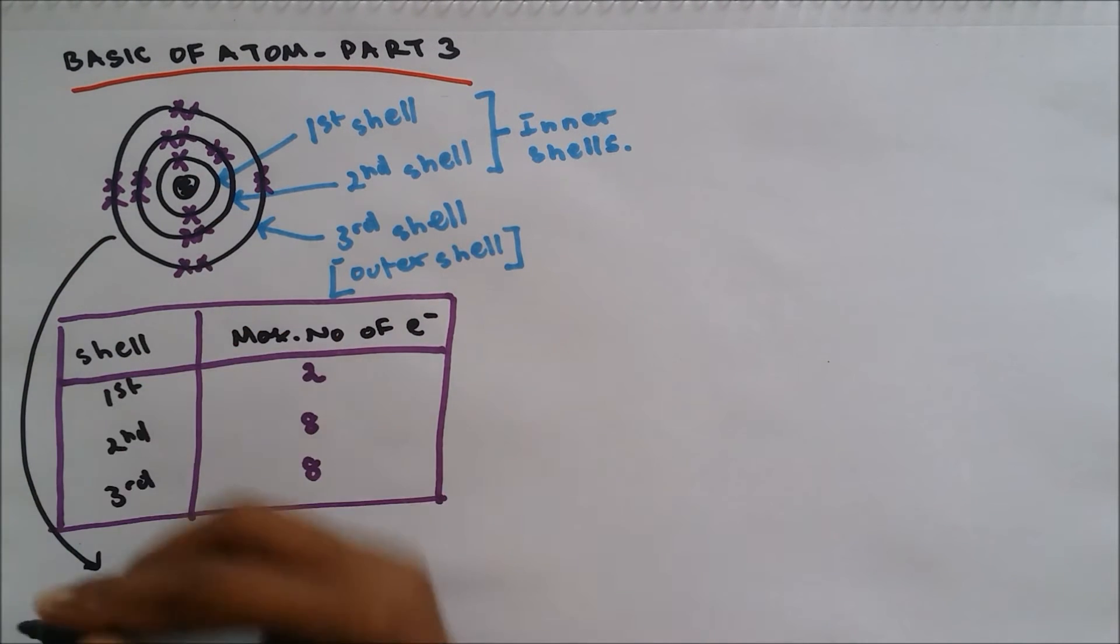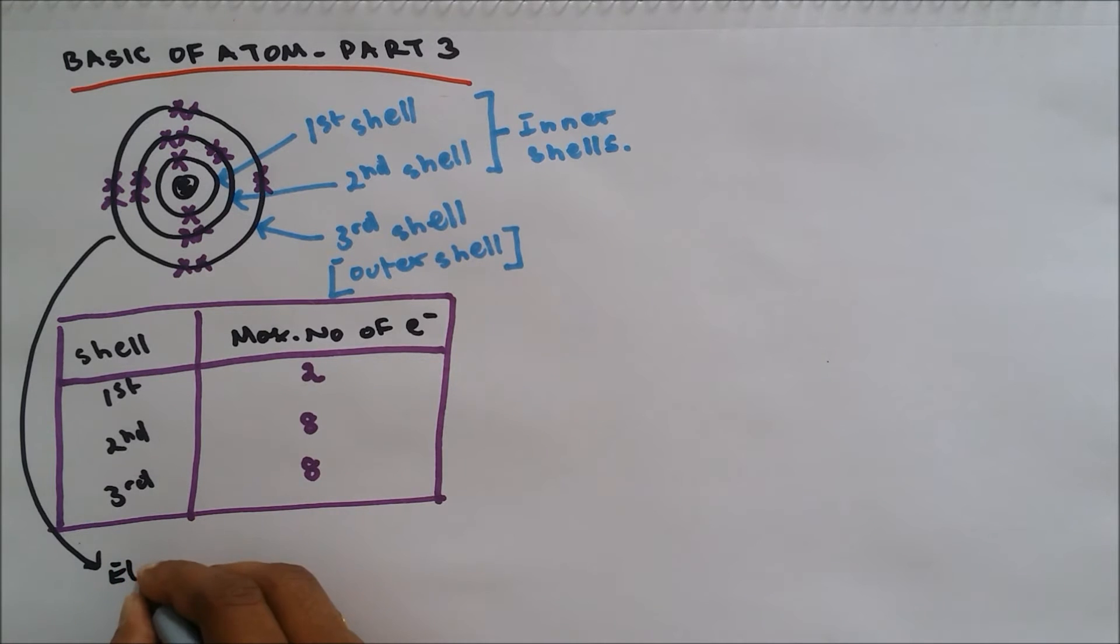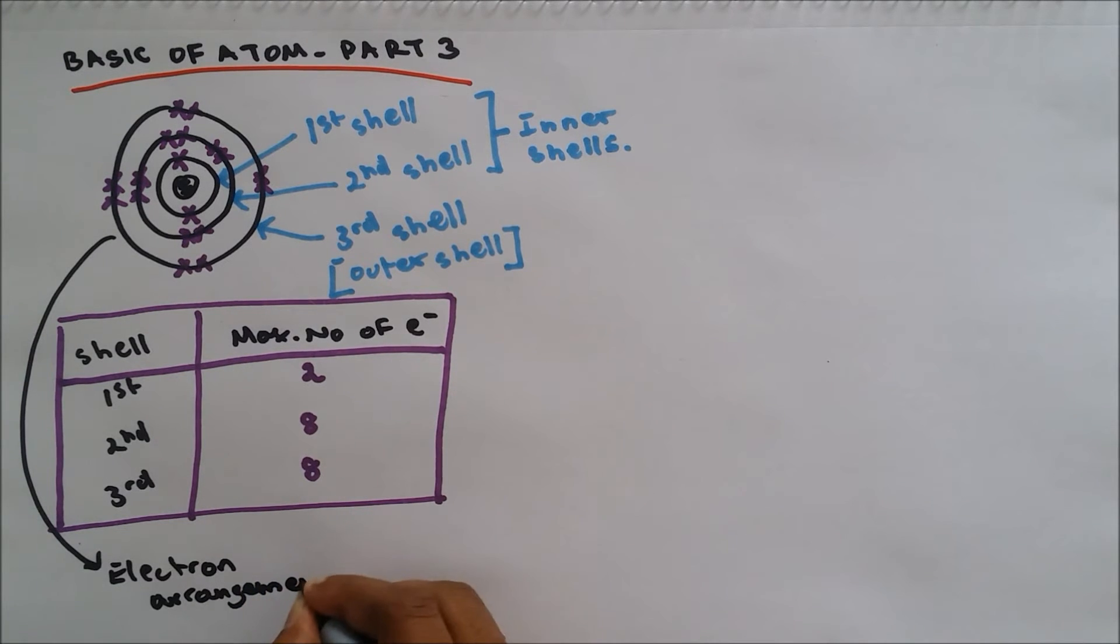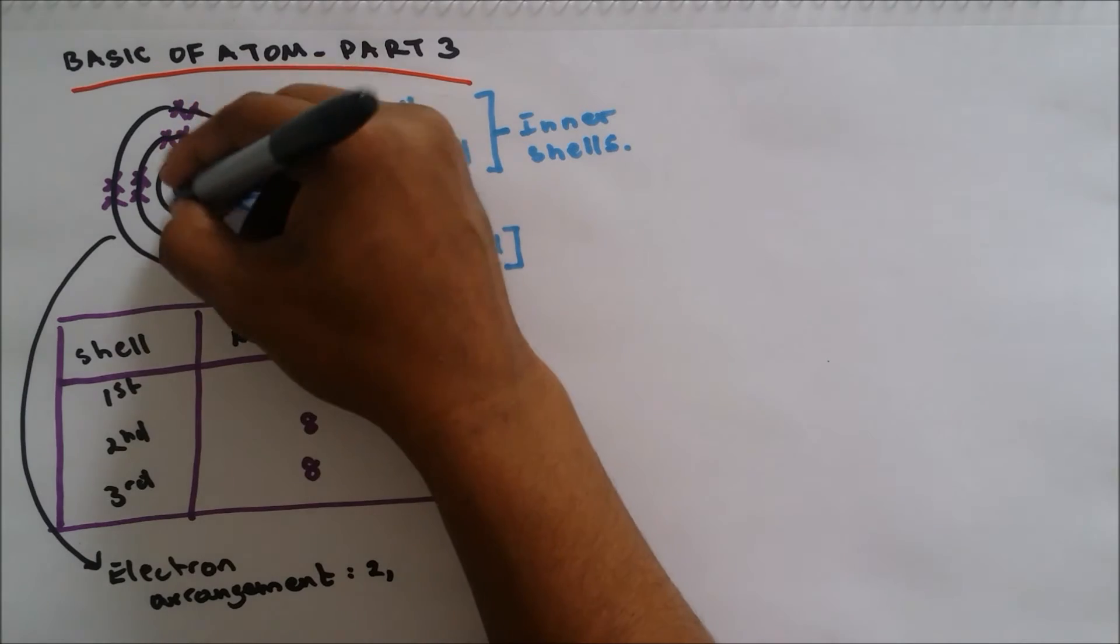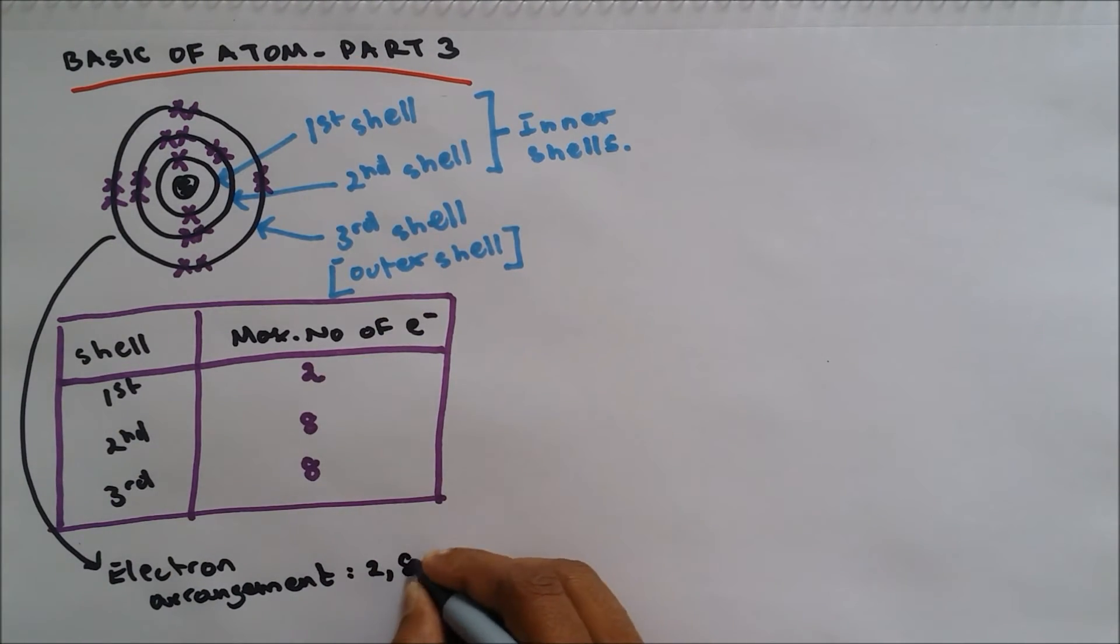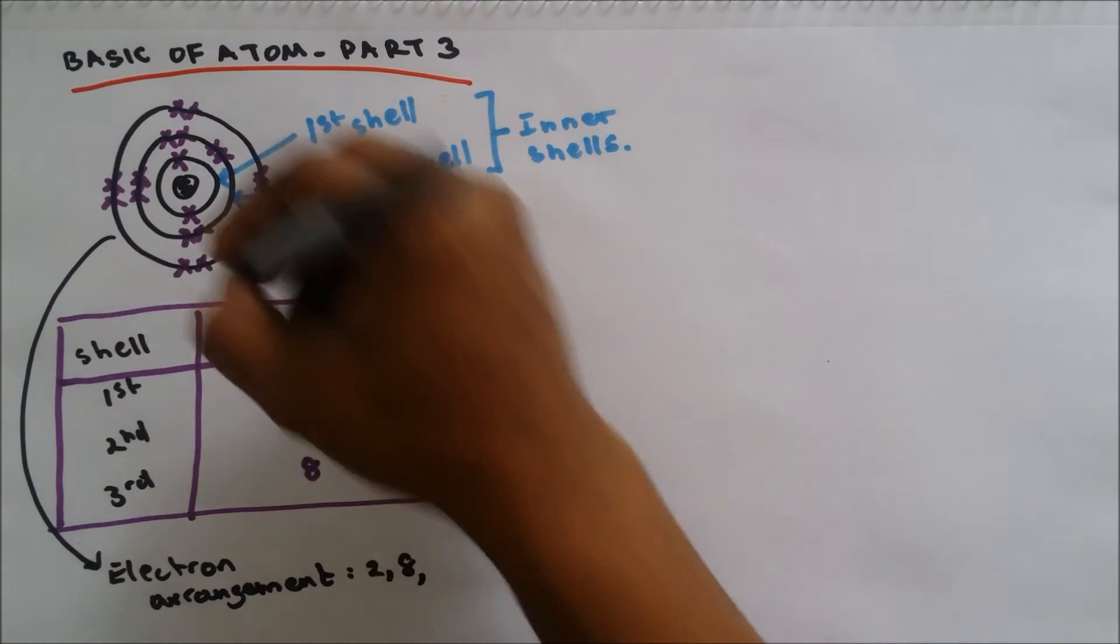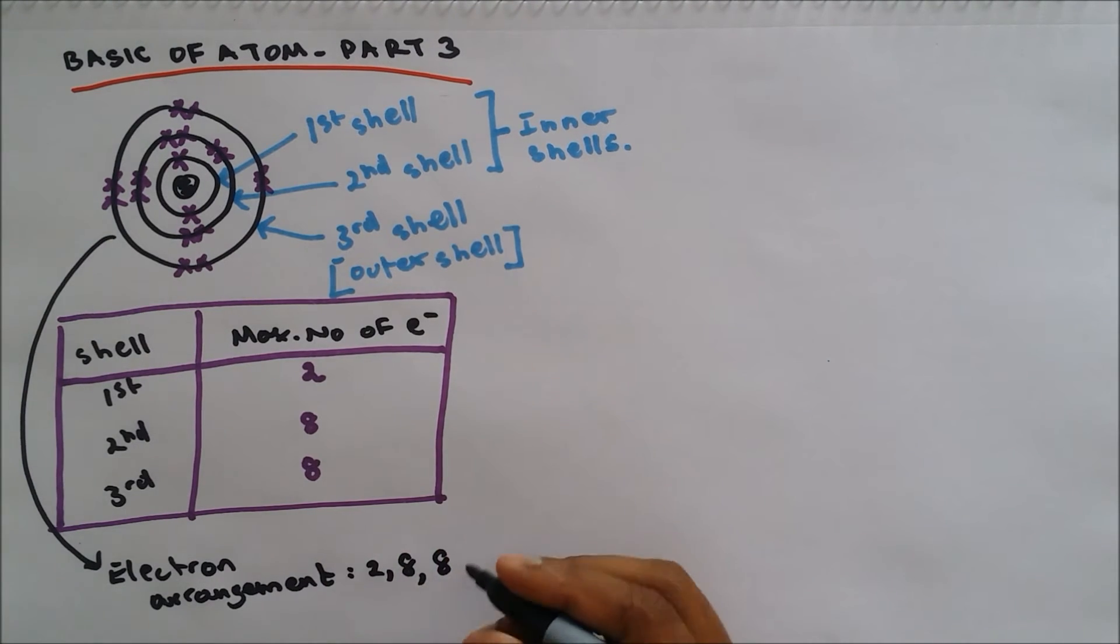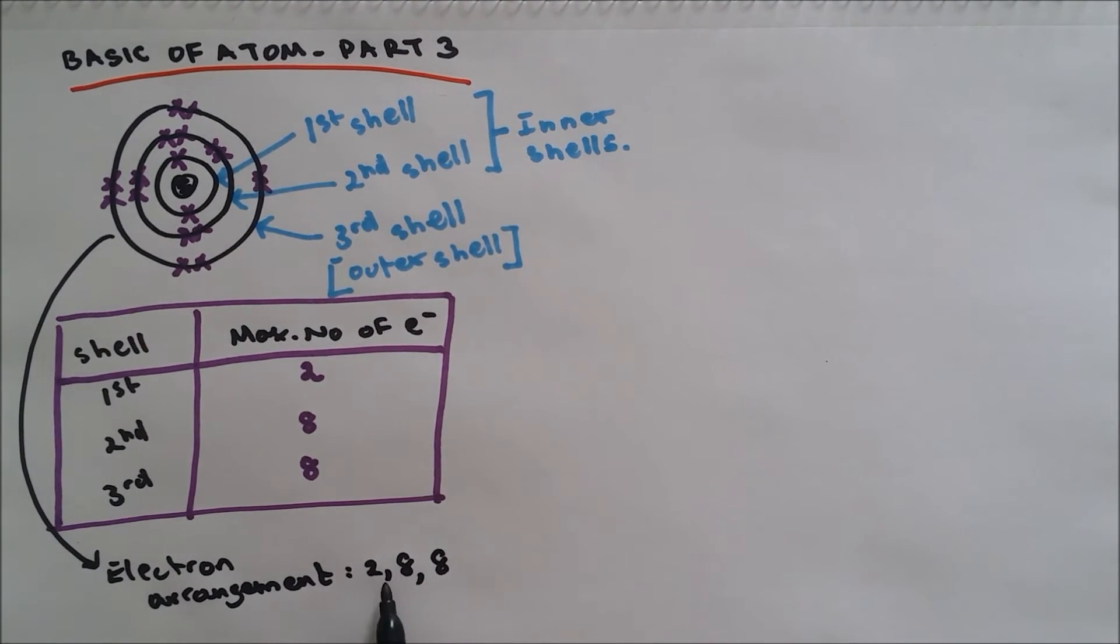We can write electron arrangement. So the electron arrangement for this atom that I've done is two because there's two electrons, and then eight, so we put a comma and then we write eight. And on the last shell we have eight, so we write eight. So electron arrangement is two, eight, eight.